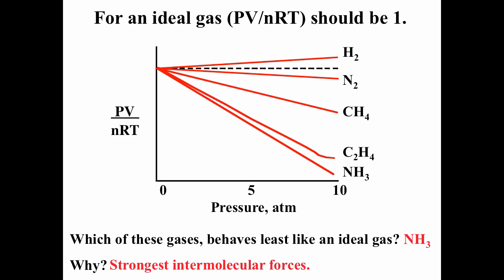That would be ammonia. Ammonia can have hydrogen bonding, so it's going to have the strongest intermolecular forces. And so under high pressure and low temperature, gases stop behaving ideally.